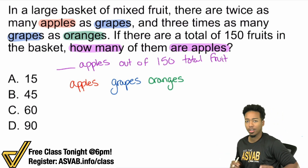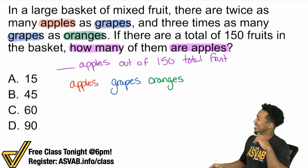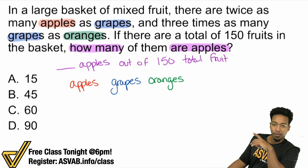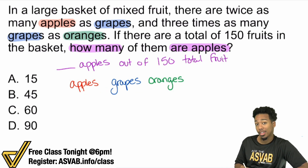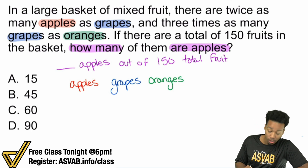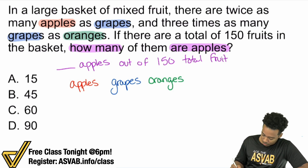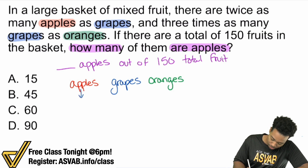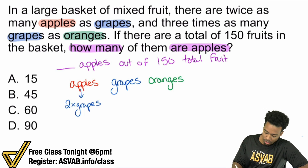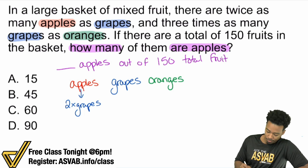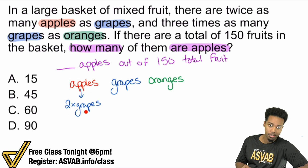We have these three fruits. If I want to set anything up — apples out of total — we need to figure out how to compare apples to the total. It's all in the clues. Twice as many apples as grapes. What that tells me is: if I'm looking at apples, that's twice as many grapes. So whatever apples are — however many apples you have — it's double the number of grapes. Twice as many apples as grapes means apples is double the amount of grapes.